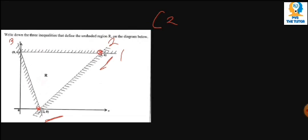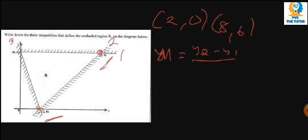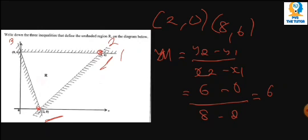So we start getting the coordinates from that point to that point. Our first coordinate is 2,0 and our second coordinates are 8,6. First thing is we need to find the gradient. We know that gradient m is equal to y2 minus y1 over x2 minus x1. In this case, our y2 is 6, our y1 is 0, our x2 is 8, and our x1 is 2. So we are having 6 over 6, hence our m is equal to 1.